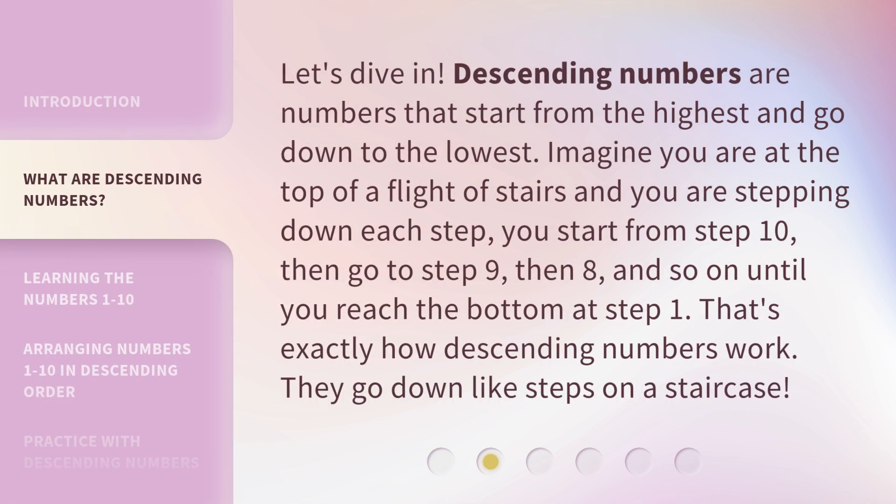Descending numbers are numbers that start from the highest and go down to the lowest. Imagine you are at the top of a flight of stairs and you are stepping down each step. You start from step 10, then go to step 9, then 8, and so on until you reach the bottom at step 1. That's exactly how descending numbers work — they go down like steps on a staircase.